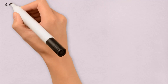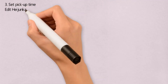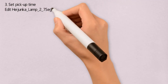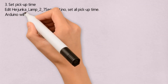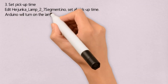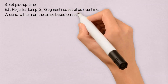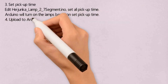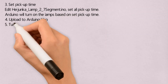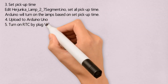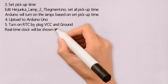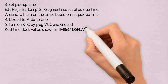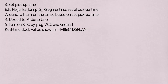Step 3 — set pickup time by editing HiJunka Lamp 27 segment.ino and setting all pickup times. Arduino will turn on the lamps based on the set pickup time. Step 4 — upload to Arduino Uno. Step 5 — turn on the RTC by plugging in the VCC and ground cable. The real-time clock will be shown on the TM1637 display.